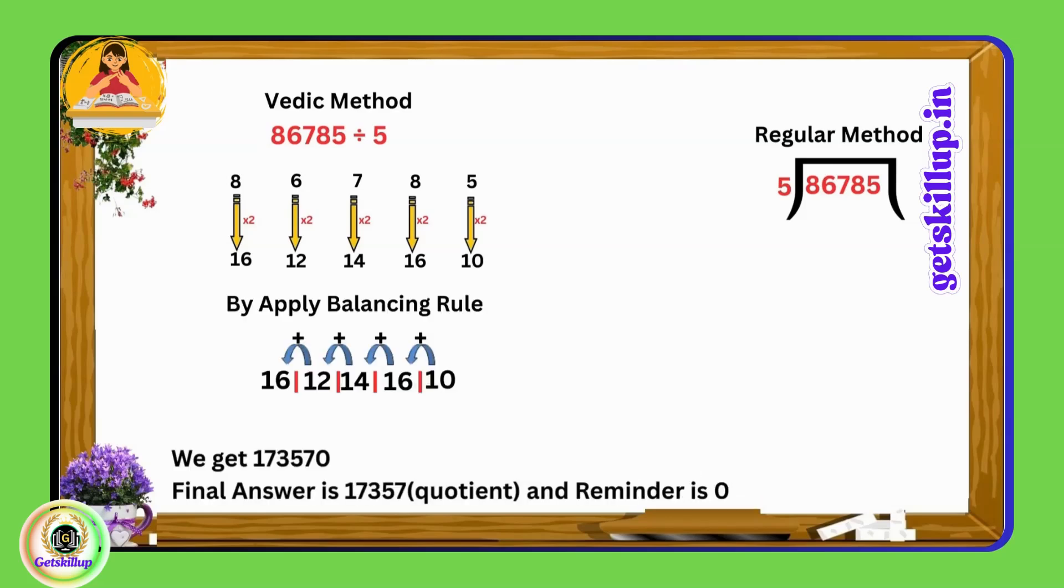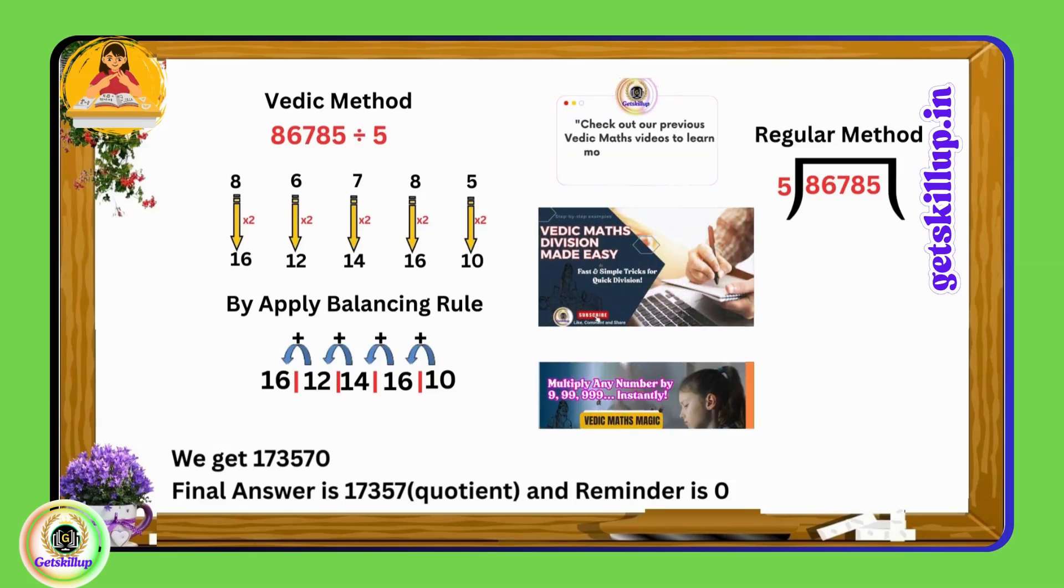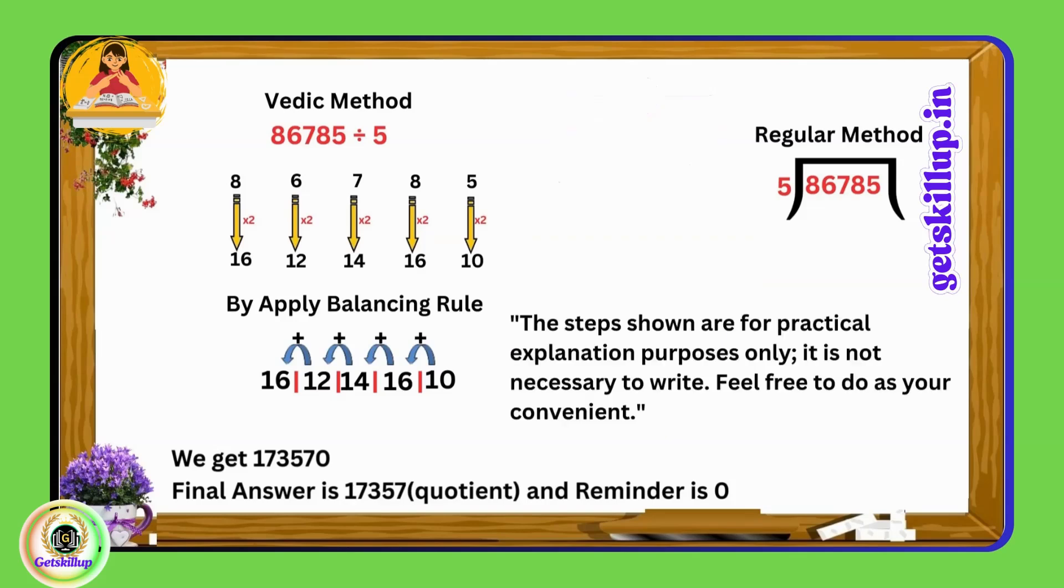So 1 plus 6 is 7, 1 plus 4 is 5, 1 plus 2 is 3, 1 plus 6 is 7, and we leave the last digit 1 as it is. Thus the result is 17357. After the decimal point if it's 0 we can omit it. Therefore the final answer is 17357. This method allows for quick and efficient calculation of division by 5.